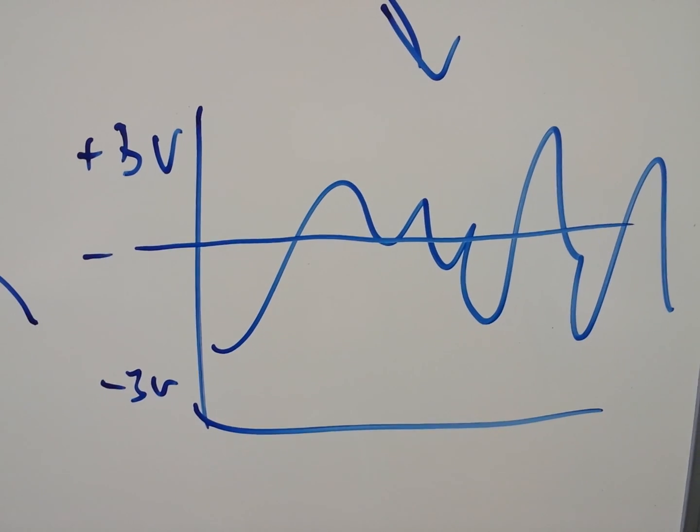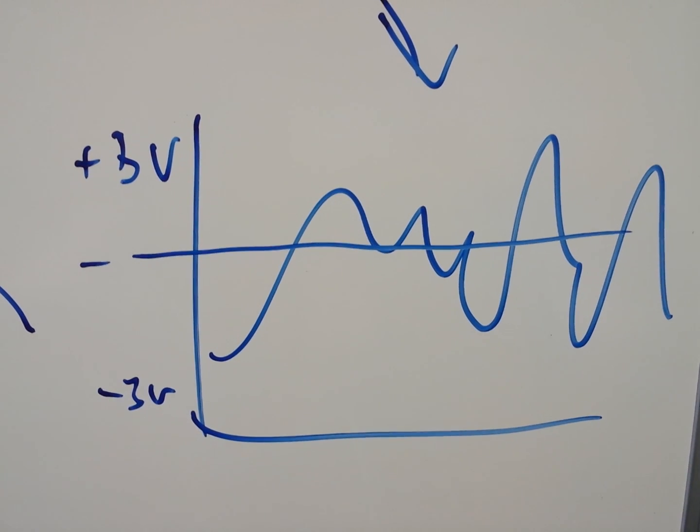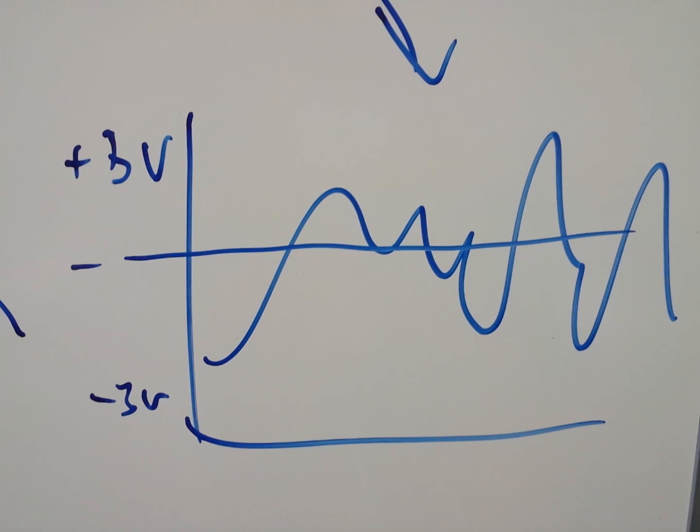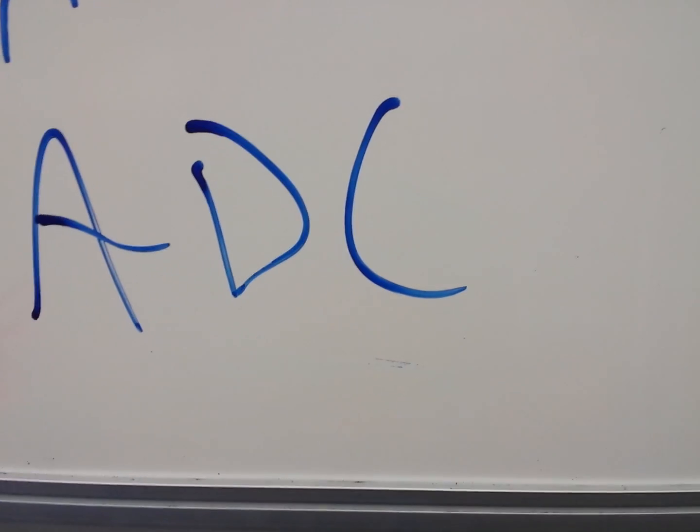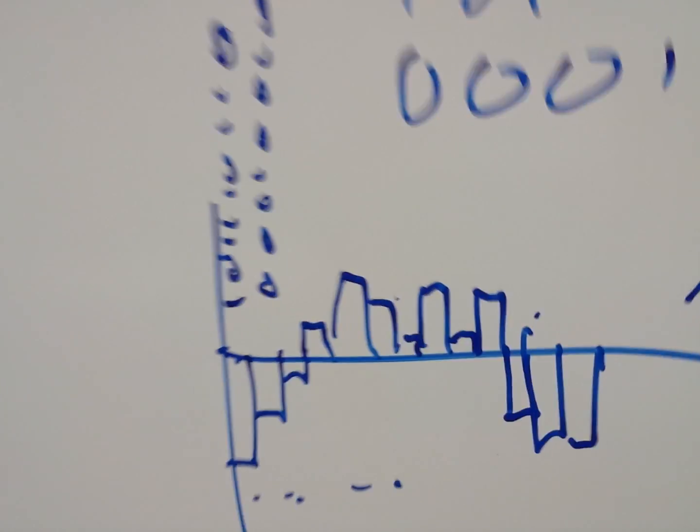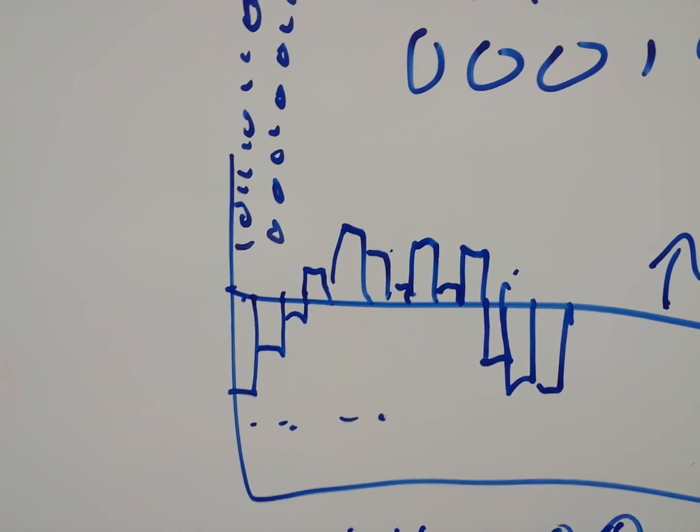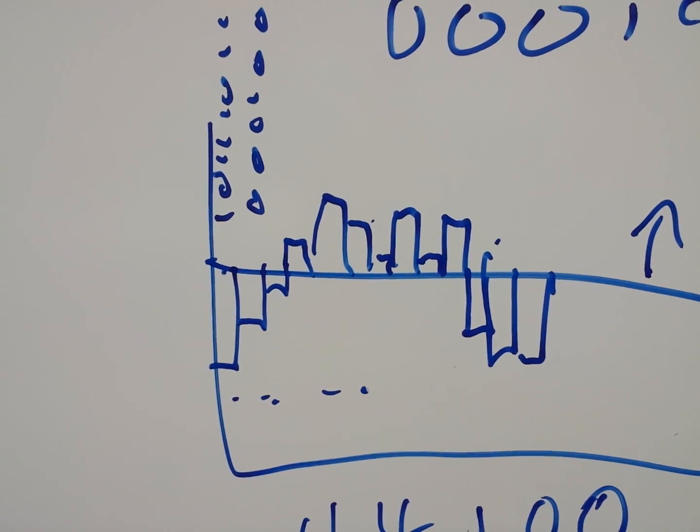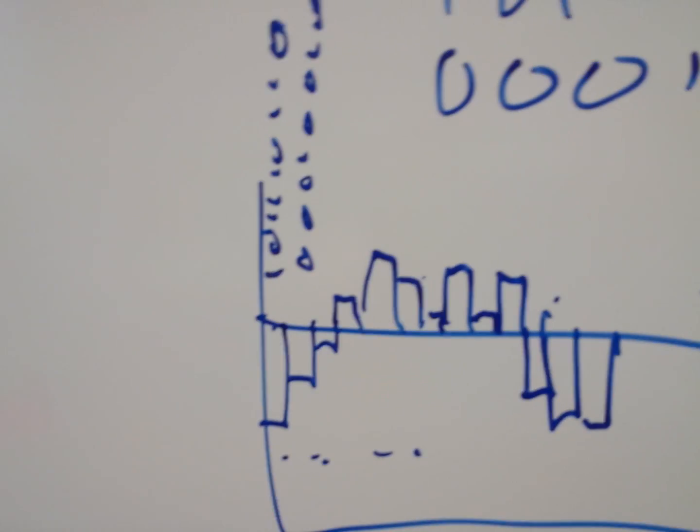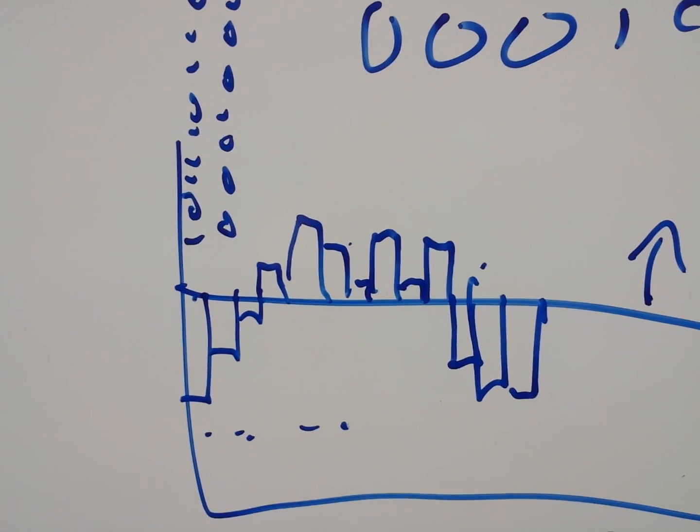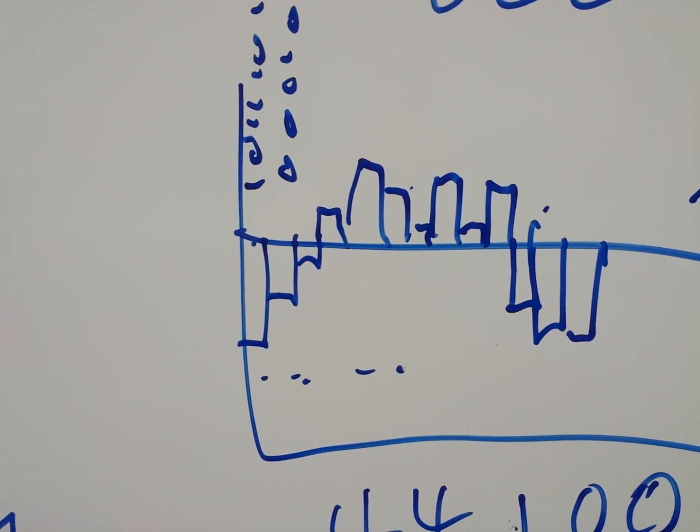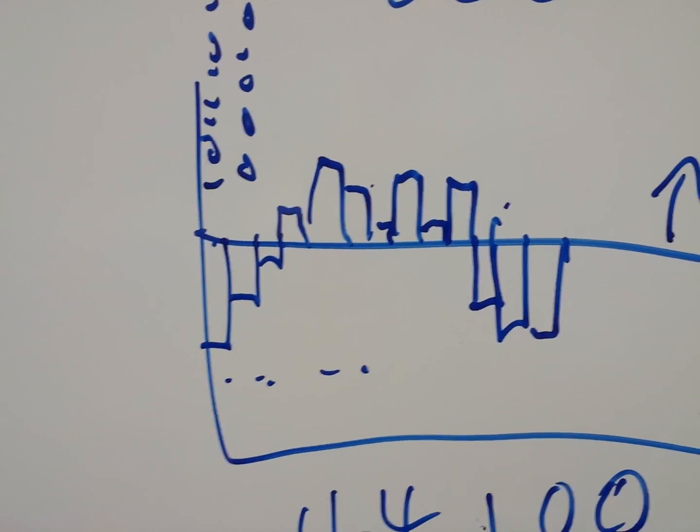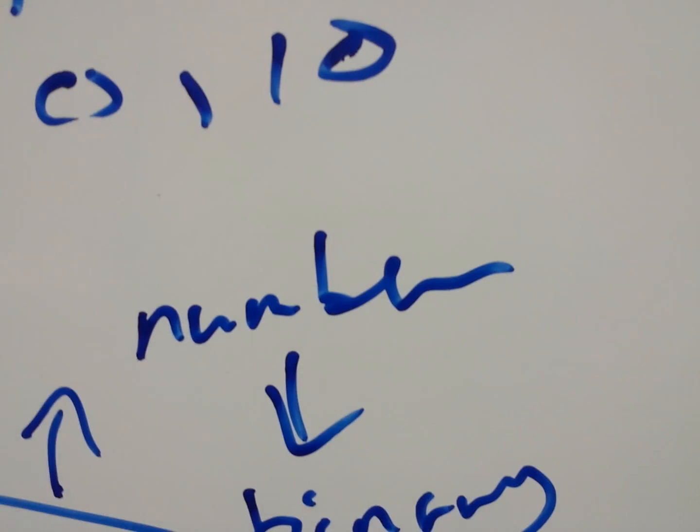What we then need to do is use a process called analog to digital conversion, which is here. Now in analog to digital conversion, what we have is we make like a little graph. So here's the analog graph, here's the digital graph. And each and every one of those graph samples can be represented as a number, which means, guess what, binary.